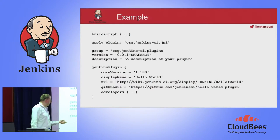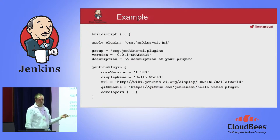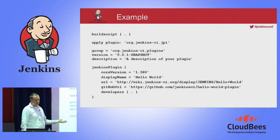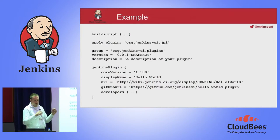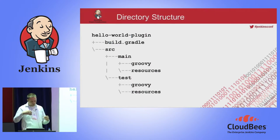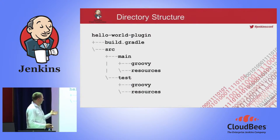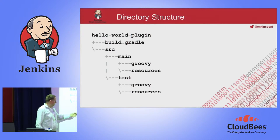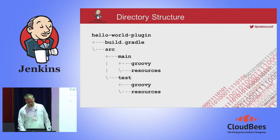You also set a URL to the Jenkins wiki — that's important because in the future, plugins without a wiki link will not be listed in the update center. You can also include your GitHub URL and list yourself as a developer, which will be available in the Jenkins wiki and generated information. The directory structure for your repository is quite obvious — more or less the same as for Maven. You have your build.gradle file, a source main folder with your Groovy and resource files, and a test folder with your Groovy and resource files.